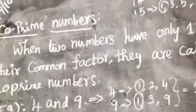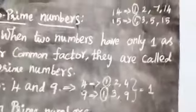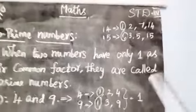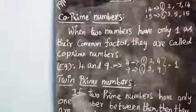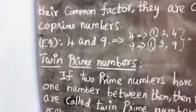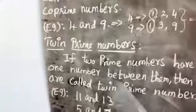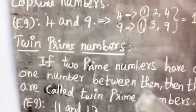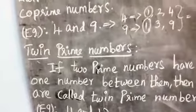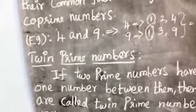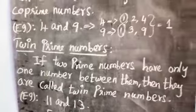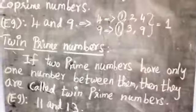The numbers which have no common factor apart from 1 are called co-prime numbers. Now look at twin prime numbers. A number that can be divided exactly only by itself and 1 is called a prime number. Examples: 2, 3, 5, 7, 11, etc.